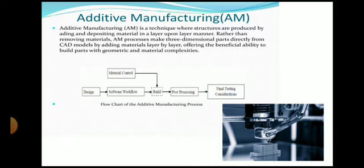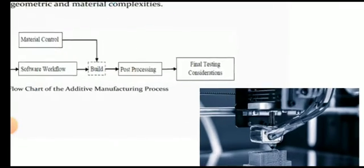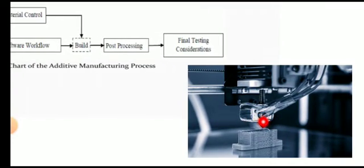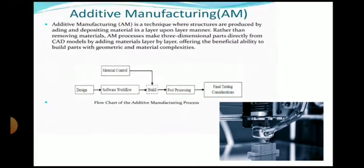In additive manufacturing, first of all we have to develop a CAD model. That CAD model is transferred to the robot for the deposition of material. By using that CAD model, the robotic software will generate a part program for depositing the material, and the robot will follow that part program and deposit material layer by layer. In additive manufacturing, there will be one nozzle and the material is in the form of wire, then it is deposited layer by layer so as to get a component.